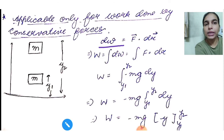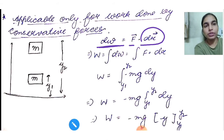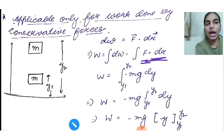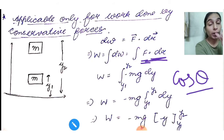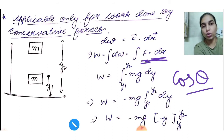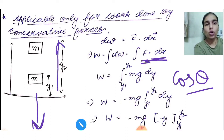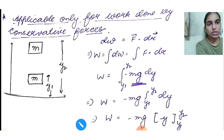The scalar product gives F·dR = F dR cos θ. Here theta is 180° because the gravitational force is downward while displacement is upward, so we write dW = −mg dy. We then integrate from Y1 to Y2: W = ∫(Y1 to Y2) −mg dy. Since mg is constant, it comes out: W = −mg(Y2 − Y1).